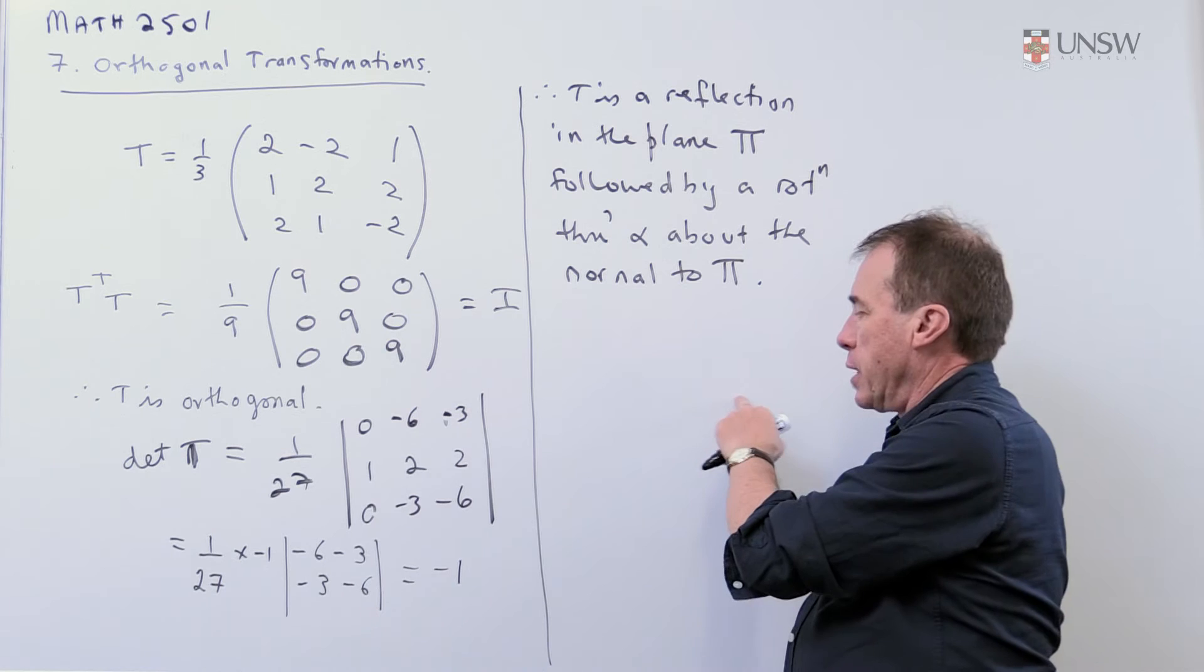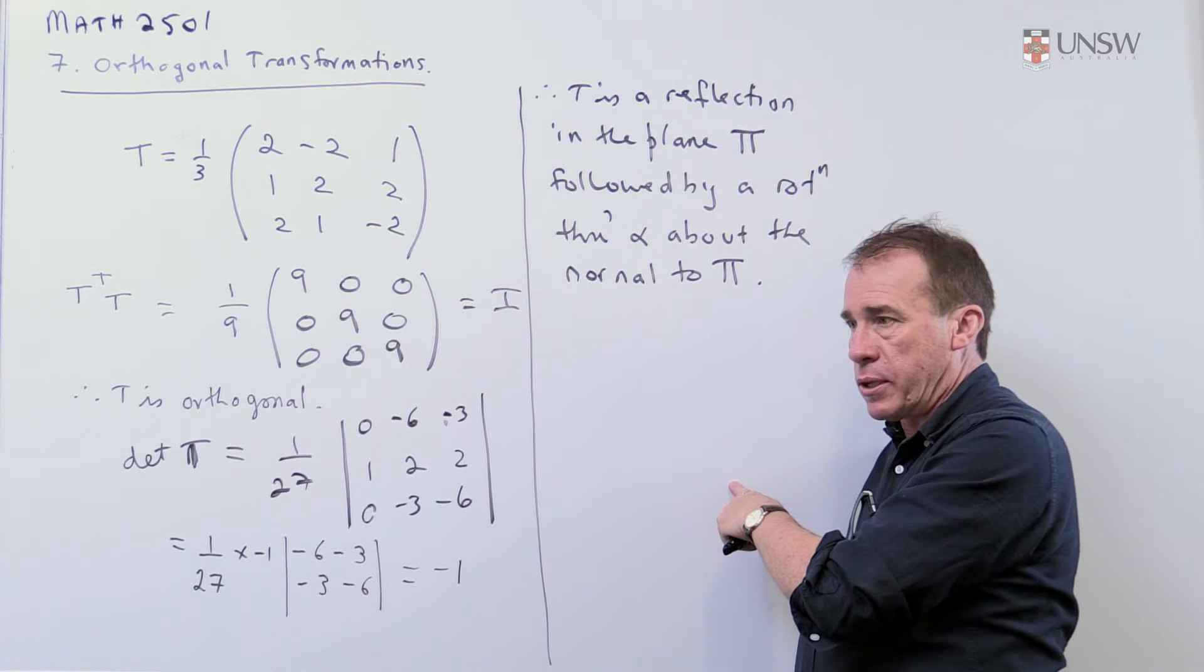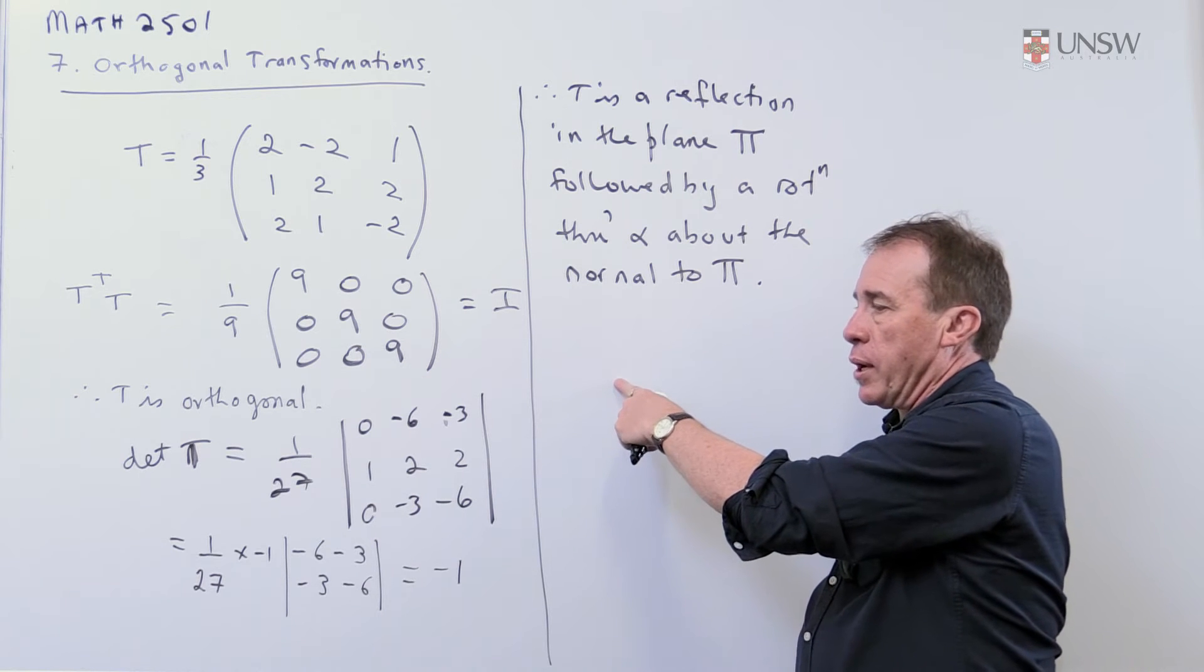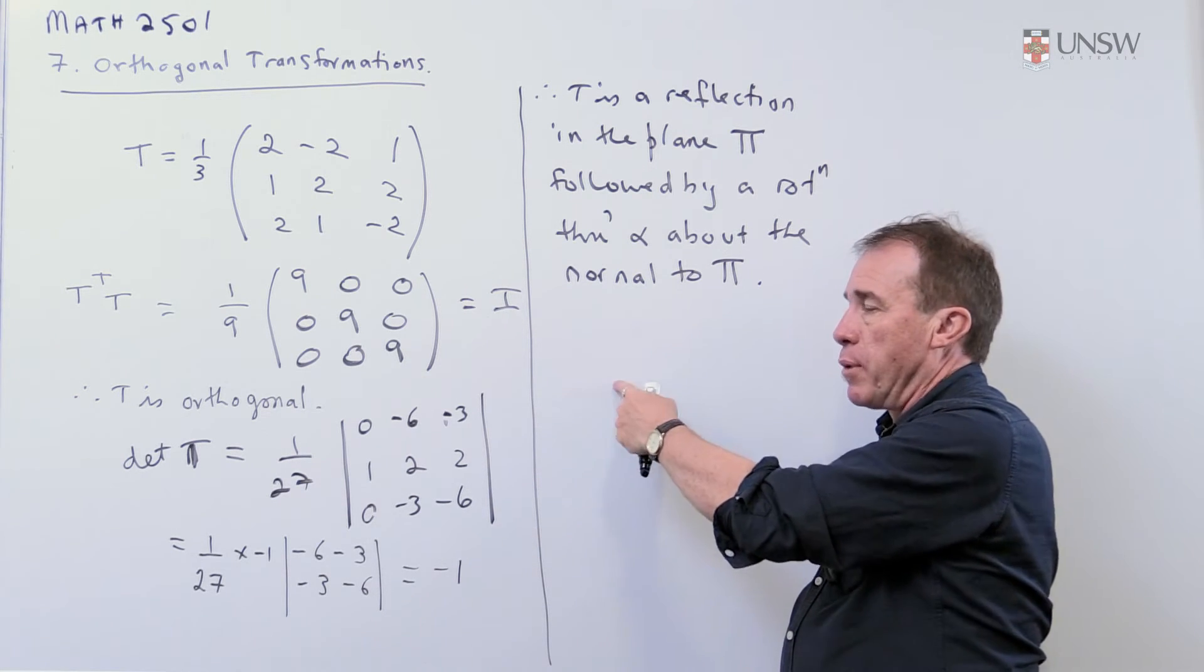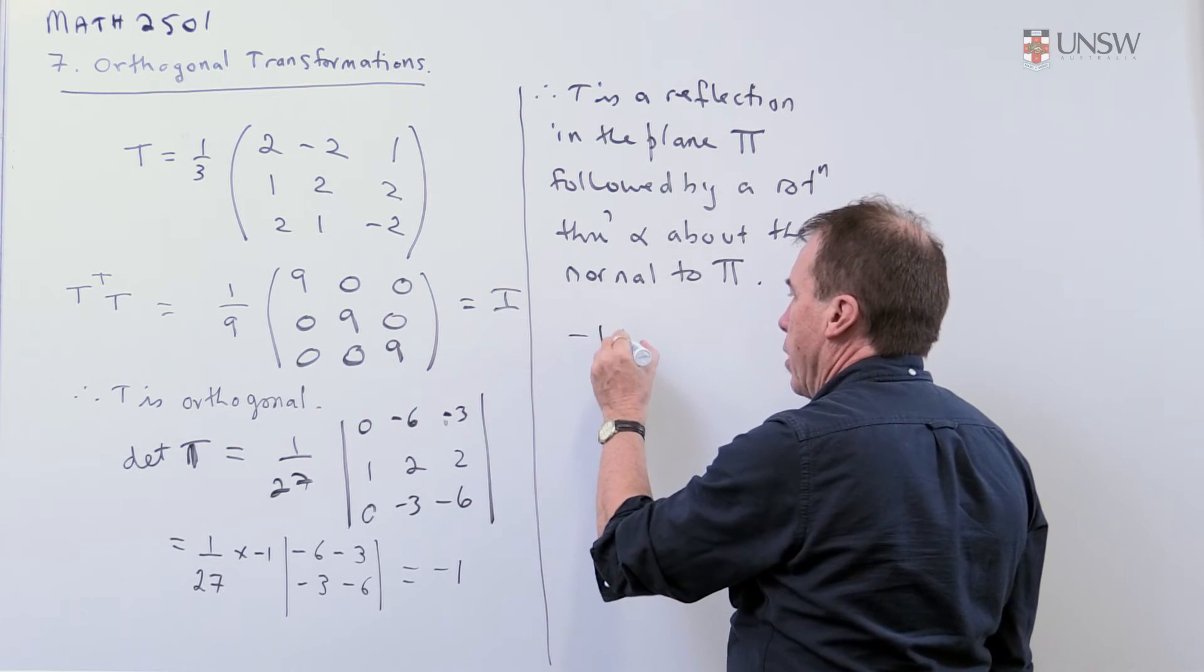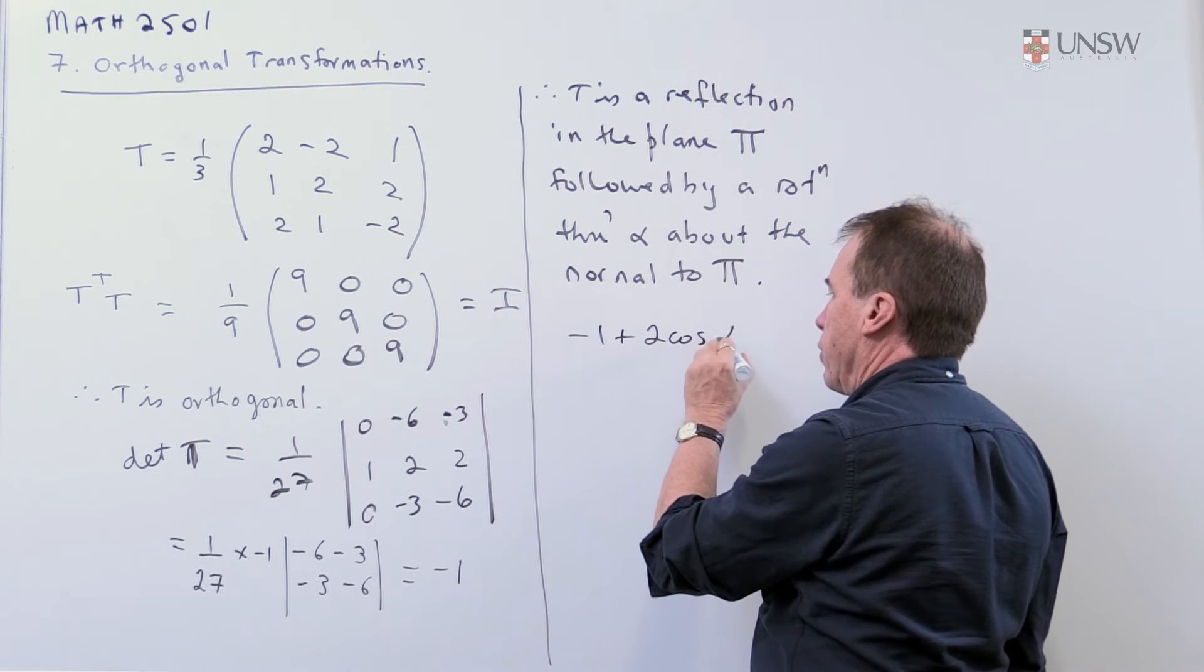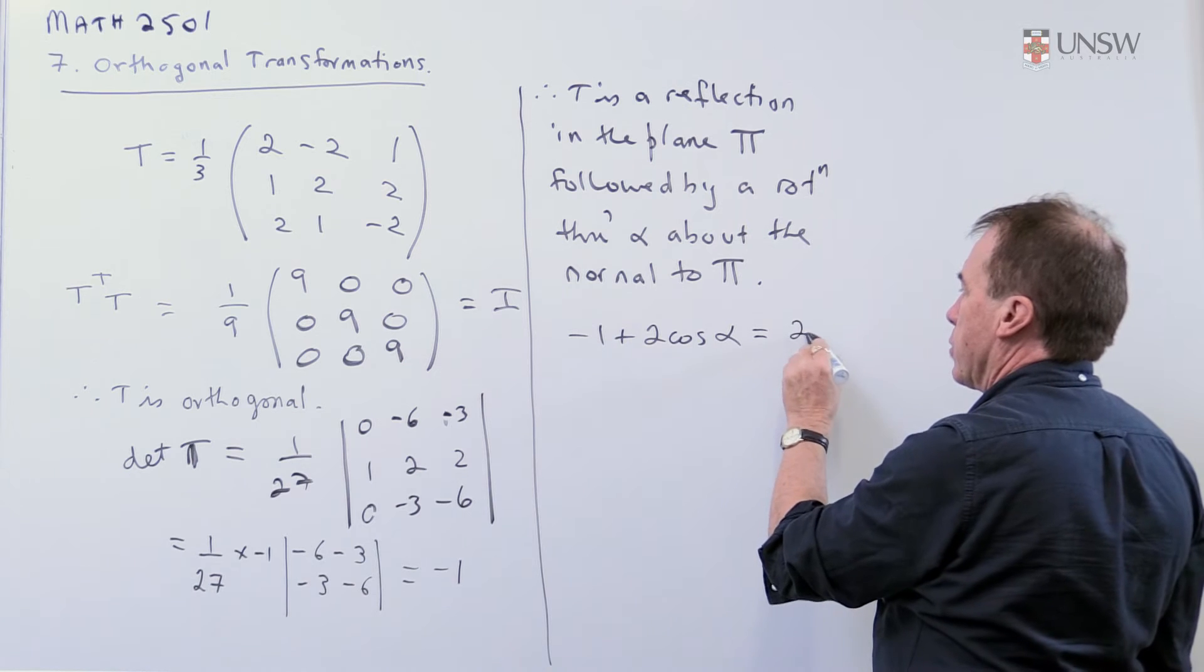Remember, it's got a cos theta sin theta minus sin theta cos theta. And up in the top corner, it's got a plus 1 if it's a pure reflection and a minus 1 if it's a mixture of them. So the trace of that matrix is minus 1 plus 2 cos alpha. And the trace of this matrix is 2 thirds.